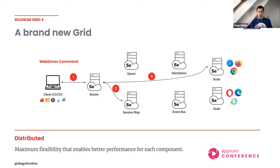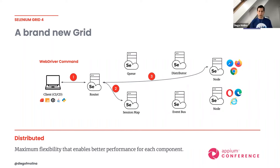This is a smarter way of routing things — only a couple of components are involved, and the heavy load handled by the distributor is not affected by ongoing session commands. In this way, Grid 4 is already much smarter than the previous version.